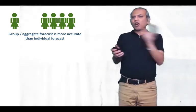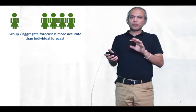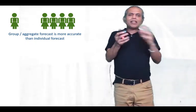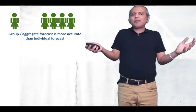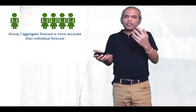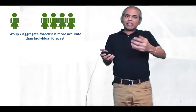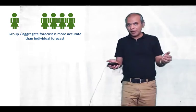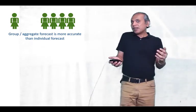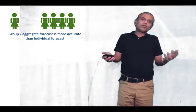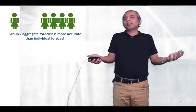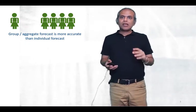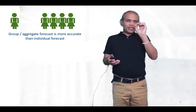Looking at this principle from a business viewpoint — if I run an apparel store, it's more difficult to predict the sale of each and every item of apparel, but it's relatively easier to predict the number of people who walk into my store on any given day. That's principle number one.